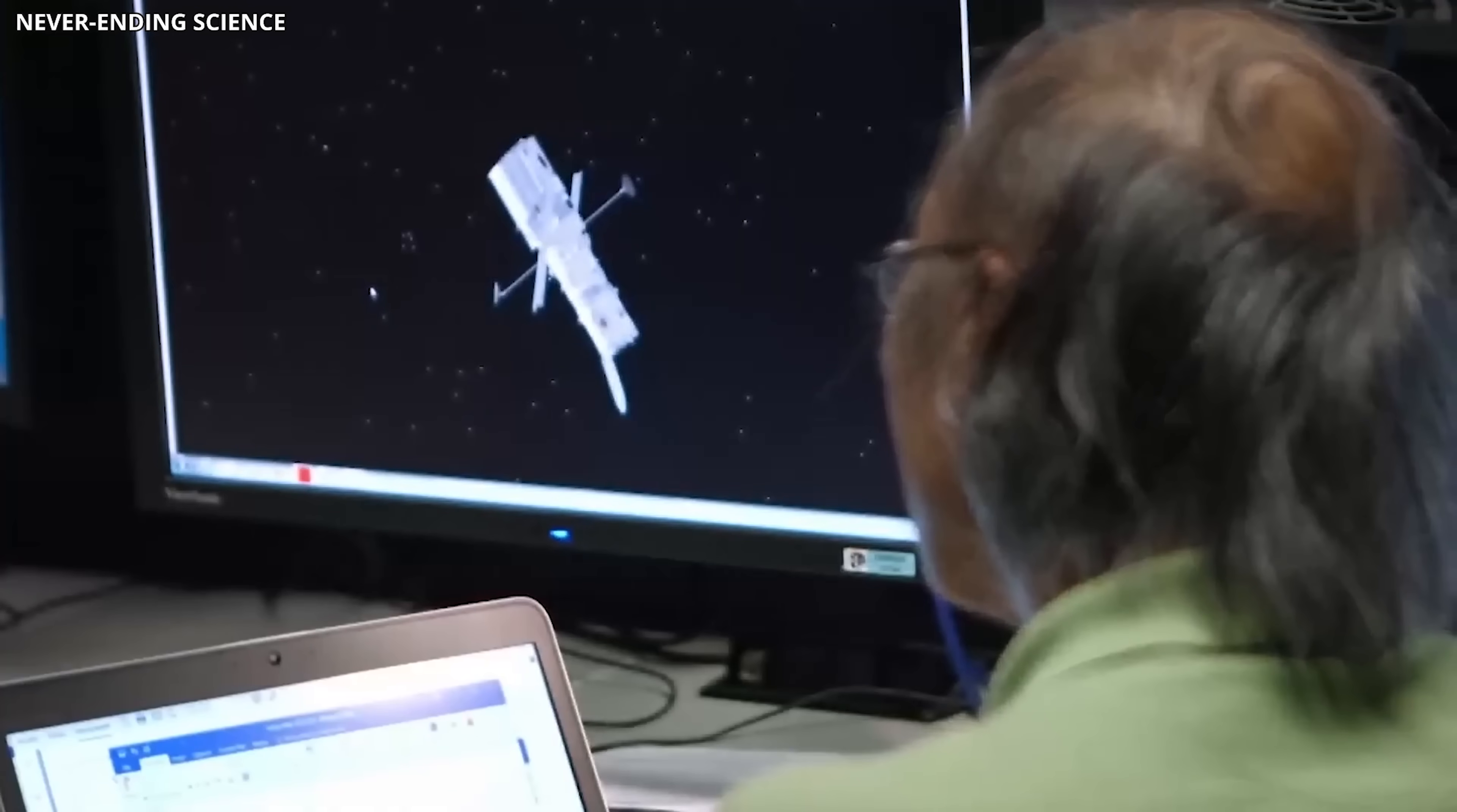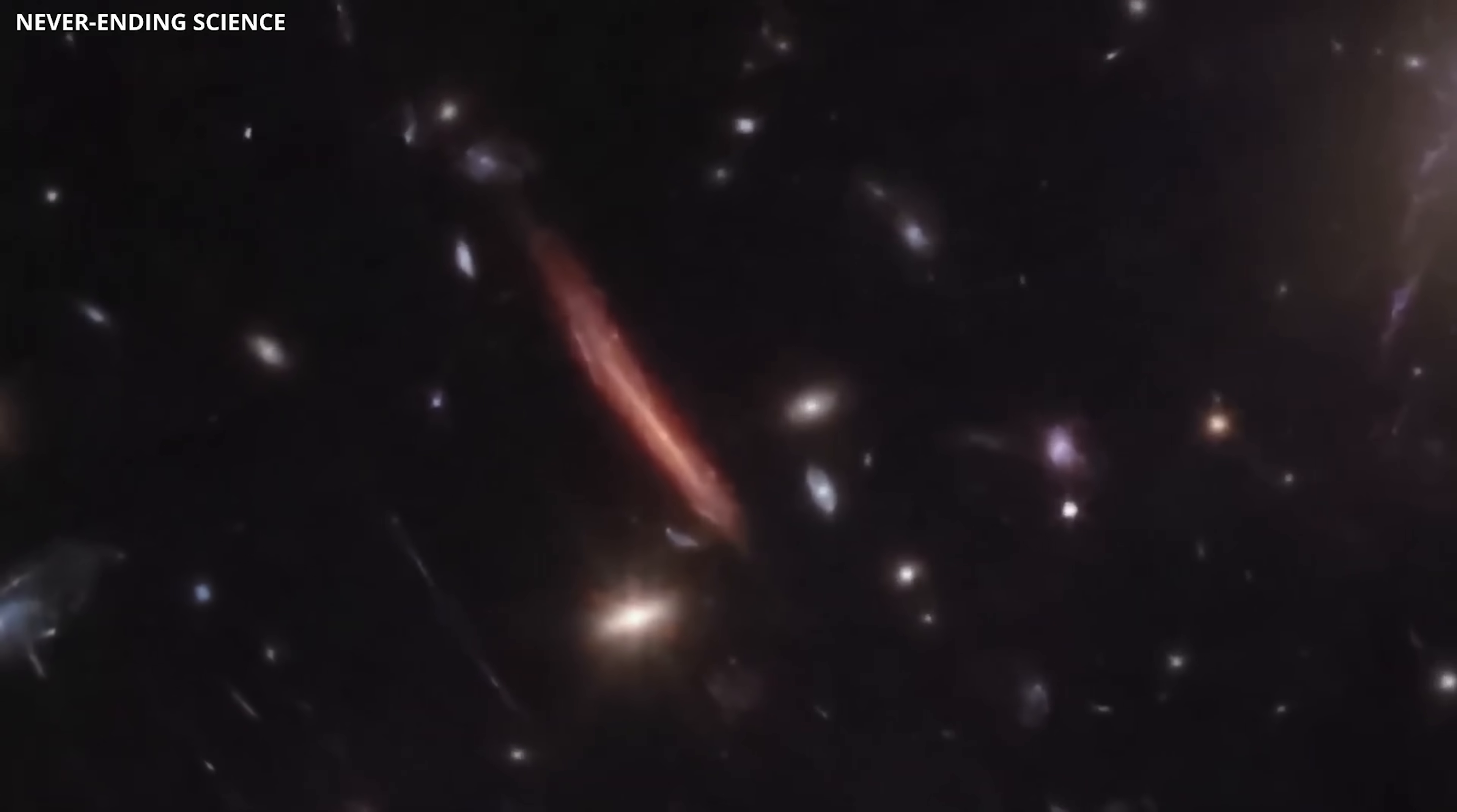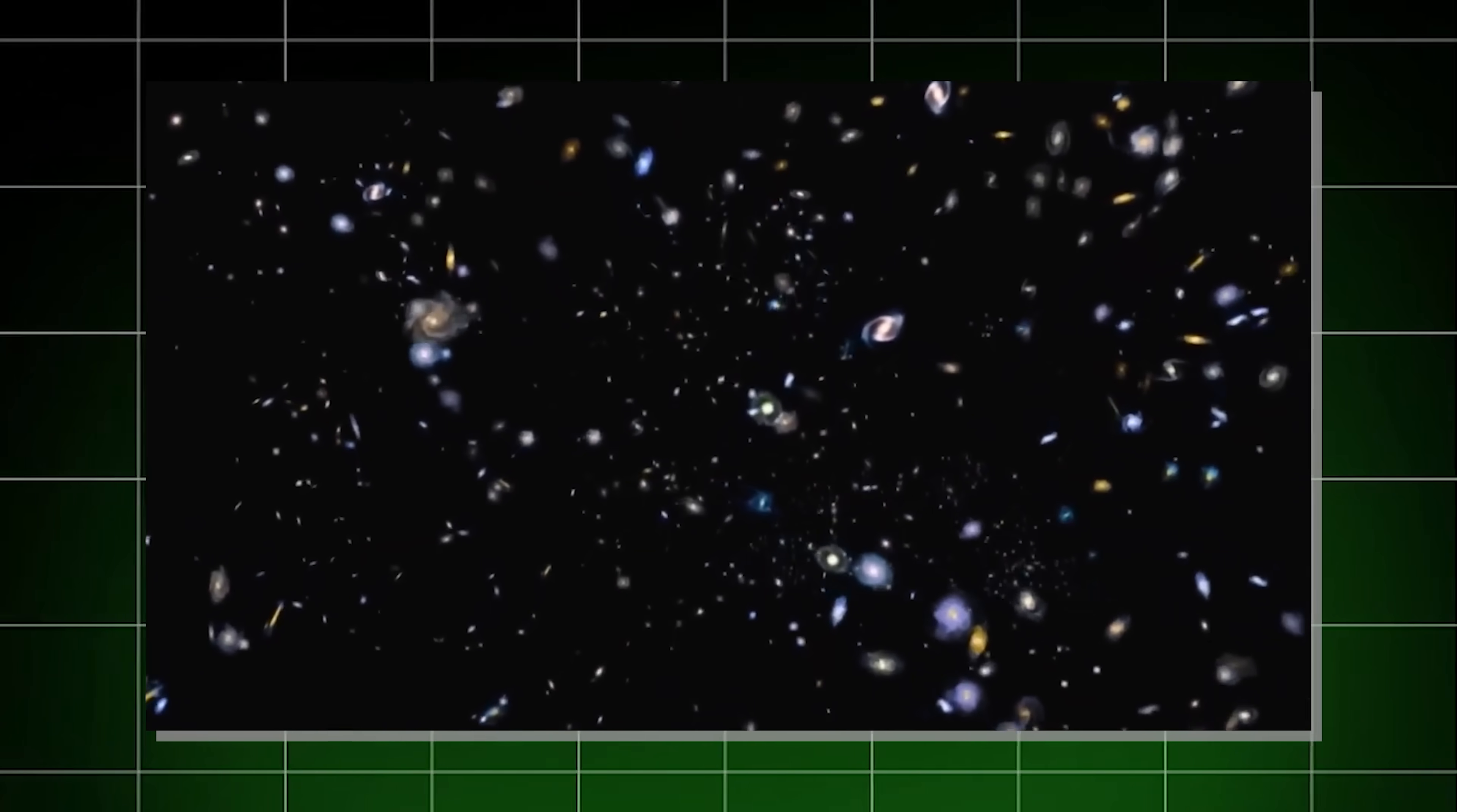A significant development occurred when researchers published a study in the Astrophysical Journal, detailing the identification of 87 galaxies that may have existed between 200 million and 400 million years post-Big Bang. This finding has sent shockwaves through the scientific community, as current cosmological models suggest that the universe should not have had the capacity to form such a large number of galaxies in such a short timeframe.